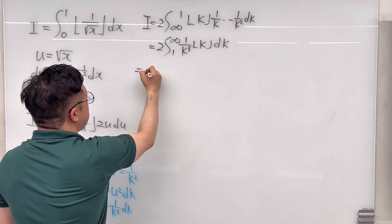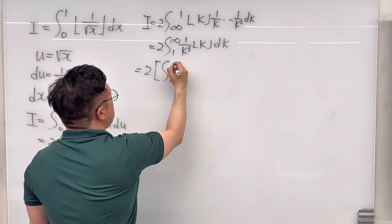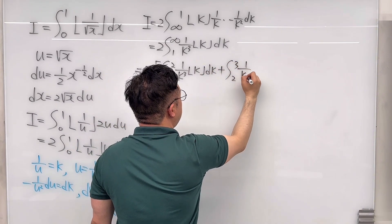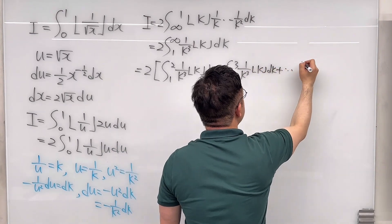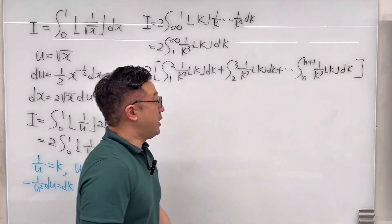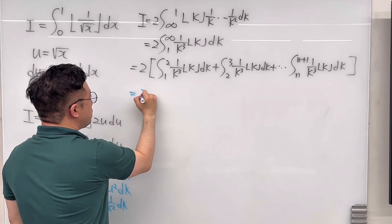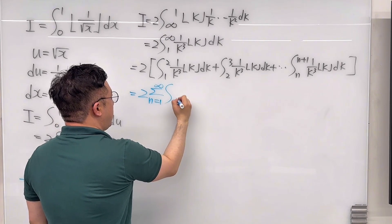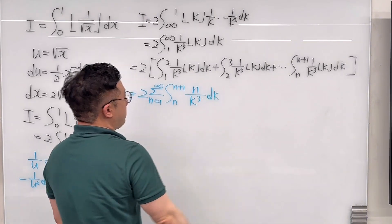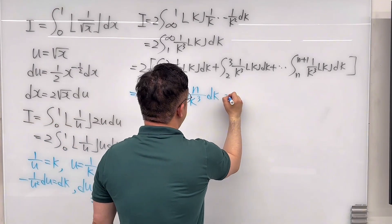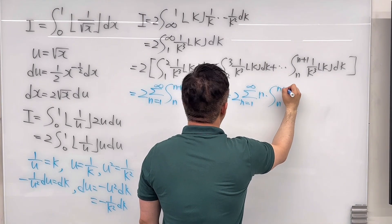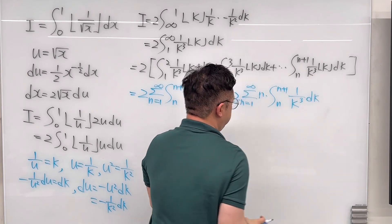Since we have a floor function, we can rewrite this using a summation sign. This is the same as 2 times the summation from n equals 1 to infinity of the integral from n to n plus 1, where the floor function equals n, so we have n over k cubed dk. Pulling n outside, this becomes 2 times the summation from n equals 1 to infinity of n times the integral from n to n plus 1 of 1 over k cubed dk.